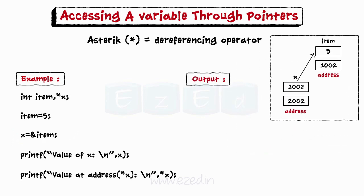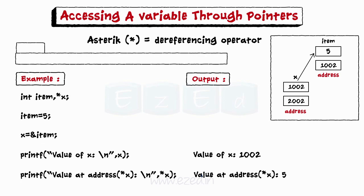The output printf value of x gives us the value 1002 and value of address prints value 5. In this case, pointer x contains the address of variable item. Note, the value pointed by x is denoted as asterisk x. Asterisk can be remembered as value at address.